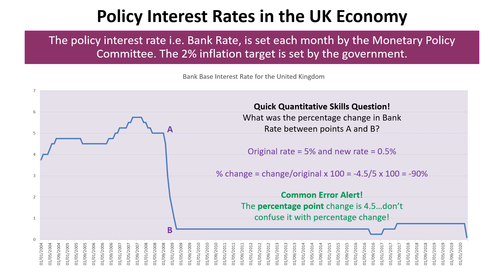Please be aware of a common error here. A lot of students might say it was a 4.5 percent fall — that is not true. It was a 4.5 percentage point fall, using percentage points as the unit of measure, but it was not a 4.5 percent fall. It was a 90 percent fall.